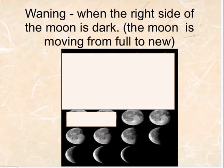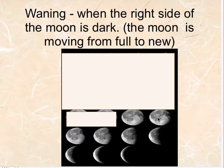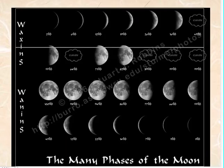The opposite of waxing is waning. With waning, the dark side of the moon is the right side — the right side is the dark side. All these moons are slowly getting more and more dark as they head towards a new moon.